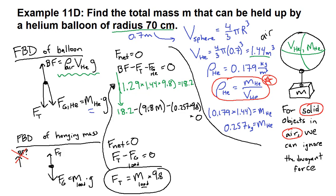So we can add 9.8 times M. This term we can add to both sides. So now we have the 18.2 minus this term here, the 0.257 times 9.8, 2.5. And that equals 9.8 times the mass.